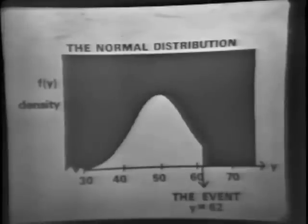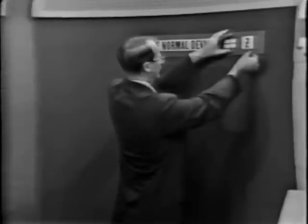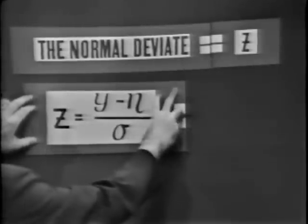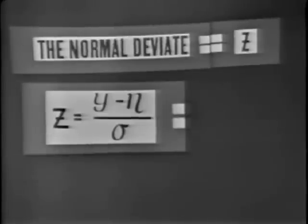Let's talk about the normal deviate. We're going to reserve a symbol for it — we'll always use the lowercase letter Z. Now, what is Z equal to? Here's the trick: you take all the observations Y that were in the normal distribution, and from each one you subtract eta. That gives you another set of quantities that still have standard deviation sigma, but now have a mean equal to 0. Then divide those quantities by their standard deviation sigma. Now you get quantities with a mean of 0, and the distance out to the point of inflection on the curve will equal 1. So the normal deviate is Z equals Y minus eta, divided by sigma.